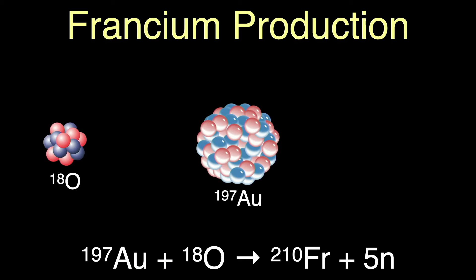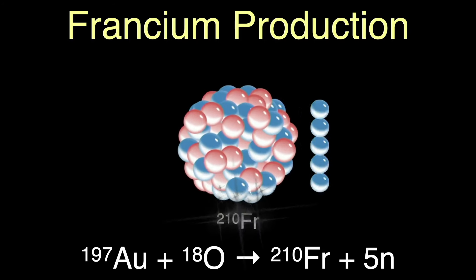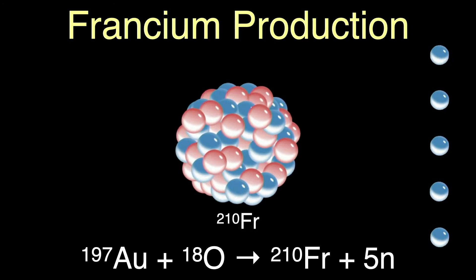Francium can also be manufactured in accelerators by smashing together nuclei of gold-197 and oxygen-18, creating atoms of francium-210, which ejects five neutrons. Francium-210 has a half-life of 3.18 minutes. Francium can also be produced in the lab by bombarding thorium with protons or by bombarding radium with neutrons, but only in small quantities. The largest amount ever synthesized was a cluster of 30,000 atoms.